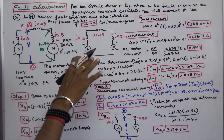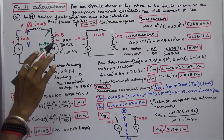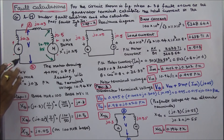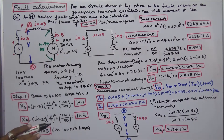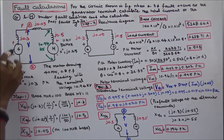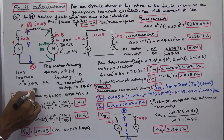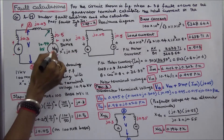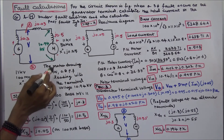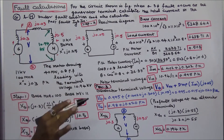In this class we work out problem 1: symmetrical fault calculation. For the circuit shown in the figure, when a three-phase fault occurs at the generator terminal, calculate the total current in the generator and the motor under fault condition, and also calculate the post-fault generator current and motor current. The generator rating is 11 KV, 100 MVA, subtransient reactance J.3. Motor rating is 11 KV, 50 MVA, subtransient reactance J.25. The motor is drawing 40 megawatts at 0.8 power factor leading, with a terminal voltage of 10.94 KV. This is the given data.